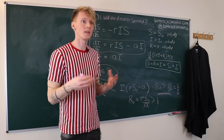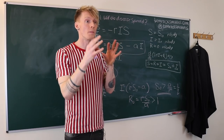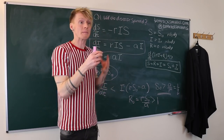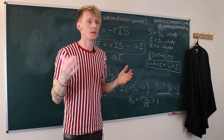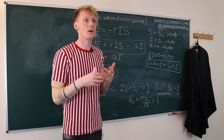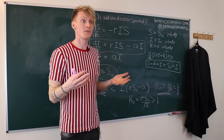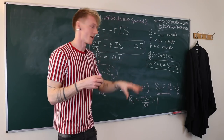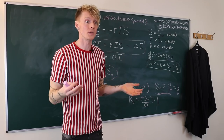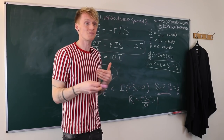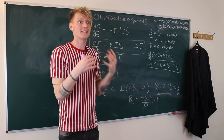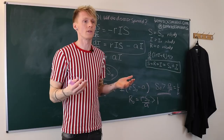R₀ represents the number of secondary infections caused by one initial primary infection — in other words, how many people on average one infected person will give the disease to. For seasonal flu, R₀ is somewhere between 1.5 and 2, whereas for COVID-19 it's estimated to be more like 3 to 4. This is why COVID-19 is spreading so rapidly all around the world.